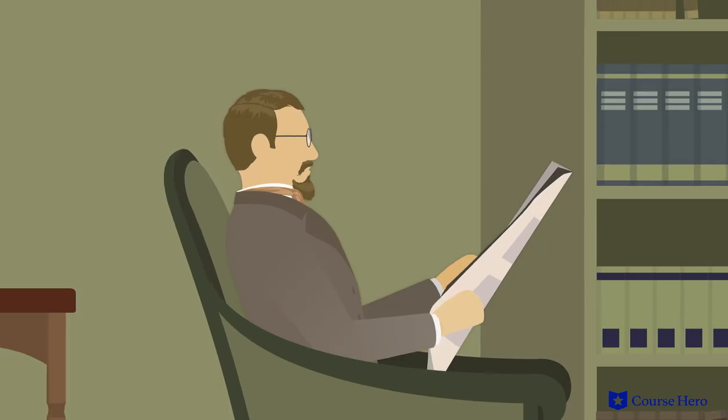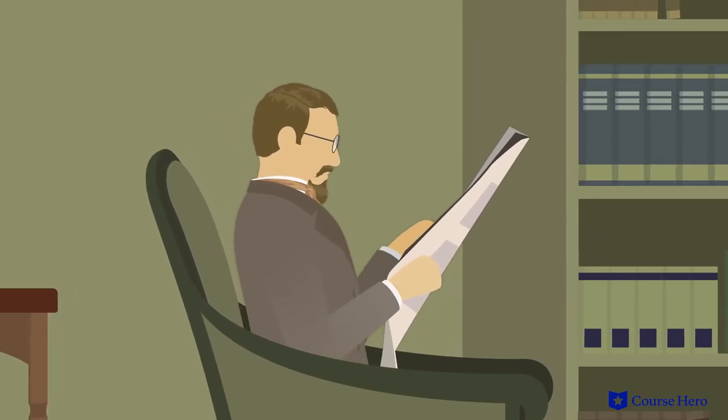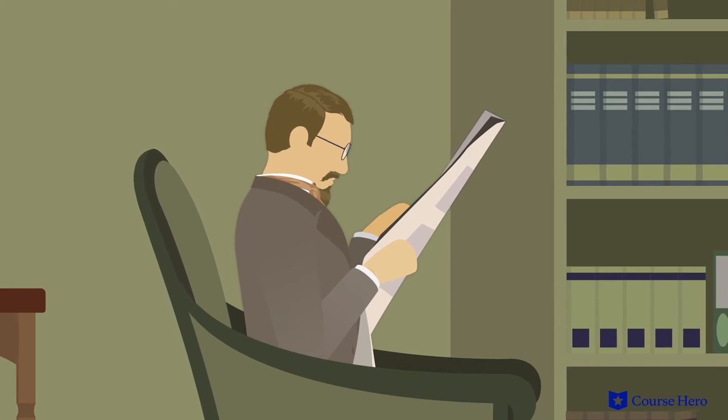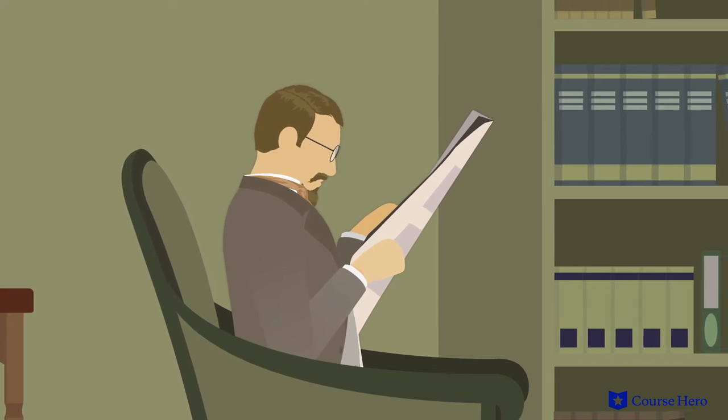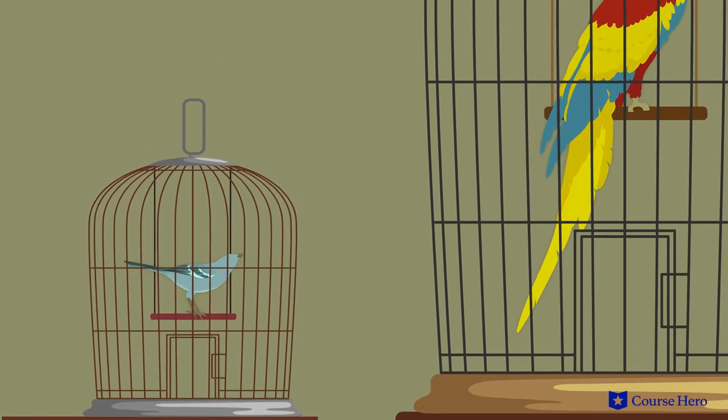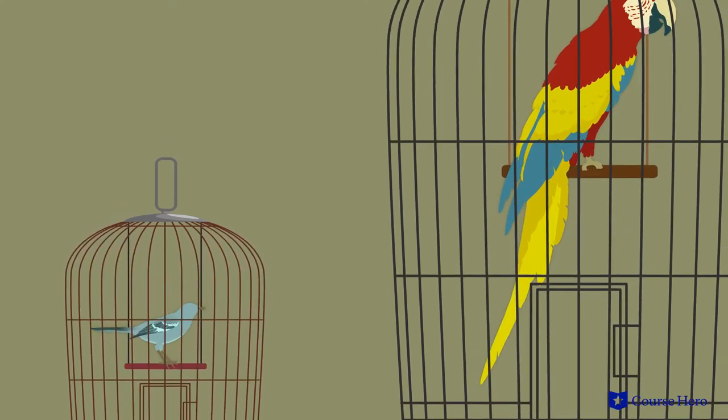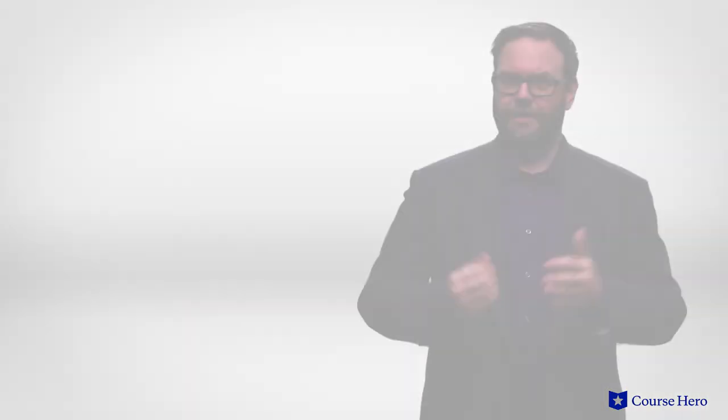The opening image of the novel shows Léonce Pontellier, a man of wealth and privilege, has the freedom to find what he desires. In contrast are the birds in cages. They have no freedom to move about as they please, but are confined in a small space in a fixed location.